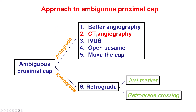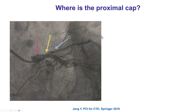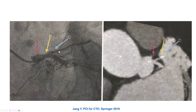The second technique is to do a coronary CT angiogram. That's something we are increasingly doing, especially in complex cases or cases that have failed before. This is an example of a patient who on the angiogram has an osteo-LAD CTO. It is unclear if the CTO is at point A, point B, or point C. However, once the CT is done, it is now clear that the CTO starts at point A.